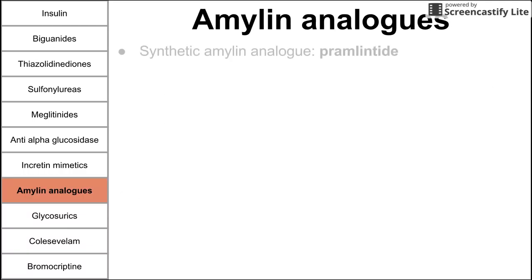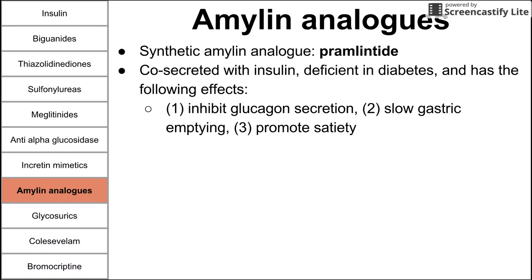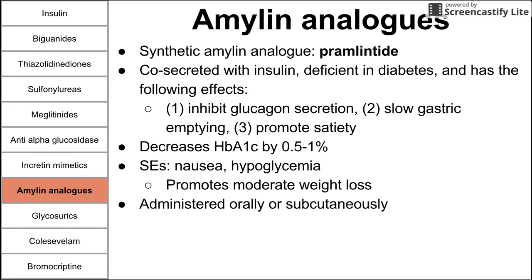Next are the amylin analogs. The synthetic amylin analog is pramlintide. Amylin is normally co-secreted with insulin and is sometimes called the second blood glucose-decreasing molecule. It inhibits glucagon secretion, slows gastric emptying, and promotes satiety. Pramlintide mimics endogenous amylin with these three effects. It decreases HbA1c by a modest 0.5 to 1%. Side effects include nausea and hypoglycemia. These drugs can also promote moderate weight loss and are administered orally or subcutaneously.